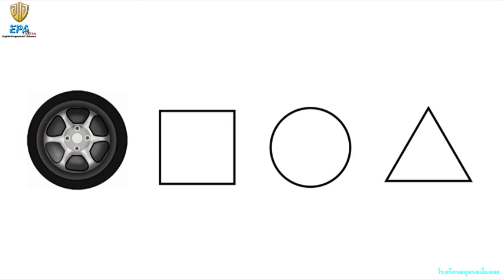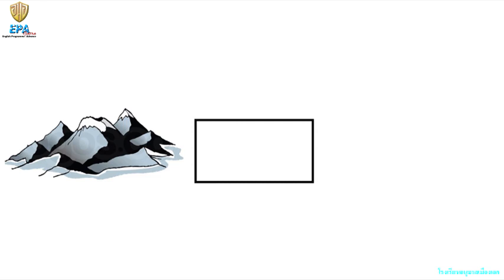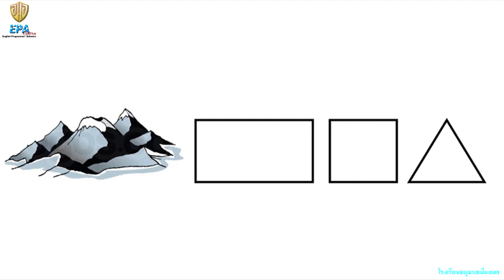Let's observe the next picture. We have here a mountain. Look at the shape of the mountain. What shape can you see? I want you to look at these shapes: rectangle, a square, or a triangle. Look at the mountain and then look at the shapes. What shape is similar to the mountain? It is the triangle. Good job!